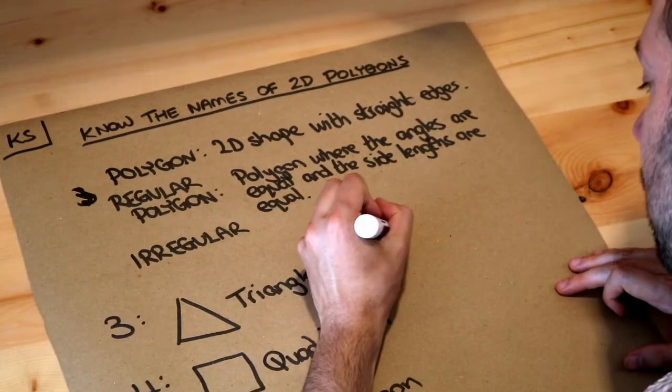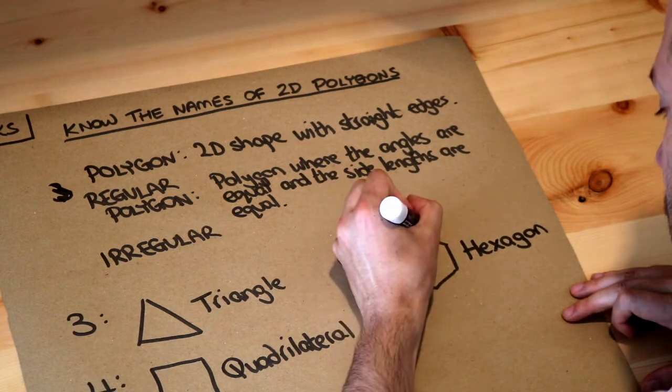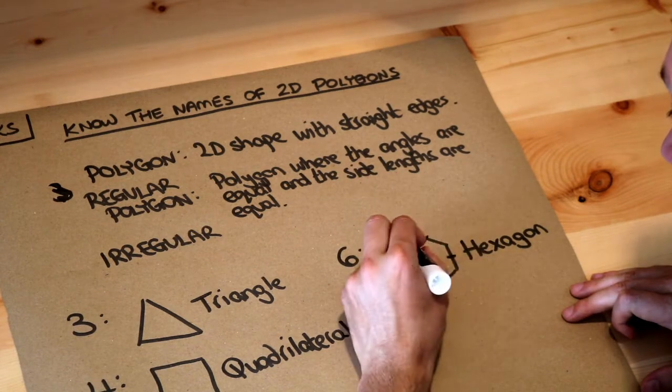What about if it has six sides? That's known as a hexagon. And this is a regular hexagon because all the sides are the same. These little marks mean that they're the same length.